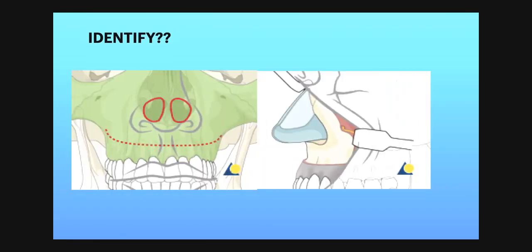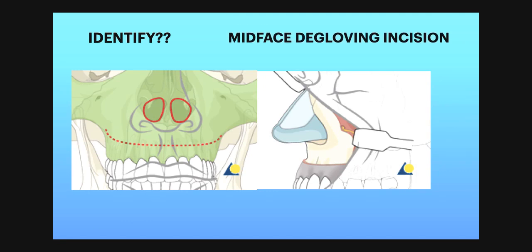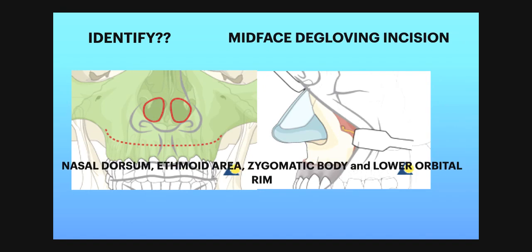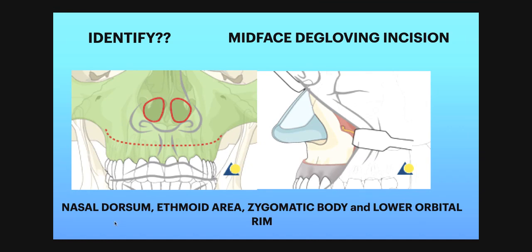This is a mid-face degloving incision — an intraoral vestibular incision. It provides access to the nasal dorsum, ethmoidal area, zygomatic body, and lower orbital rim as well. Any fracture in this area can be approached intraorally through this mid-face degloving incision.